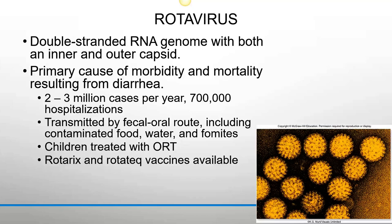The rotavirus likely causes what most people call the stomach flu. It has a double-stranded RNA genome with both inner and outer capsids. It's the primary cause of morbidity and mortality from diarrhea, with 2 to 3 million cases and 700,000 hospitalizations per year. Transmitted by the fecal-oral route through contaminated food, water, and fomites. If a child brings it home, typically everyone in the house gets symptoms within a day — a 24-hour-type stomach flu. Children are treated with oral rehydration therapy, and vaccines are available.